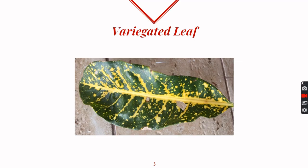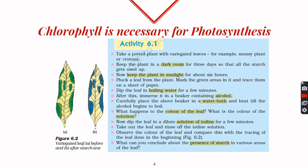Variegated leaves are colored leaves — apart from green, they also have some other color which can be yellow, red, or any other color. This potted plant with variegated leaves is kept in a dark room for at least three days so that all the starch present in the plant is used up. This process is called destarching.